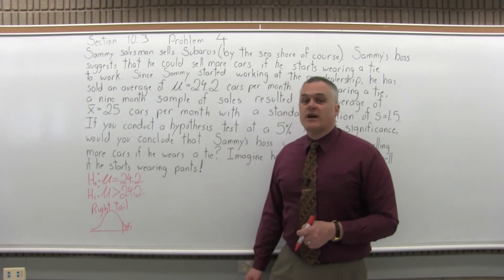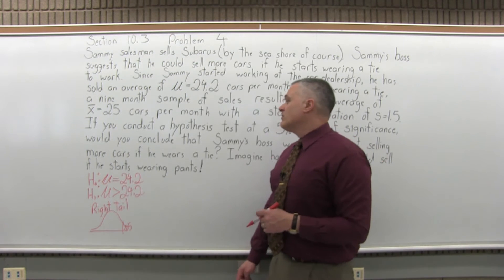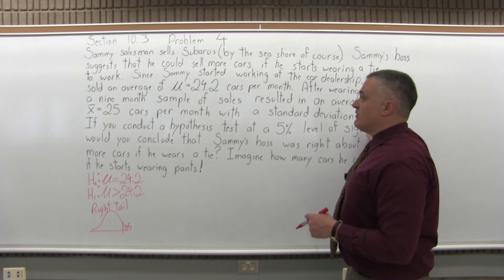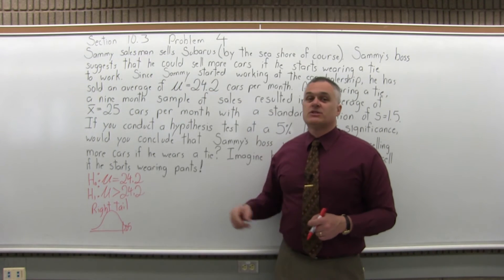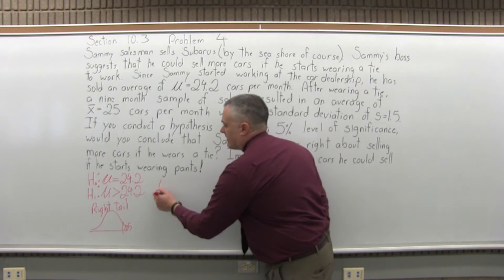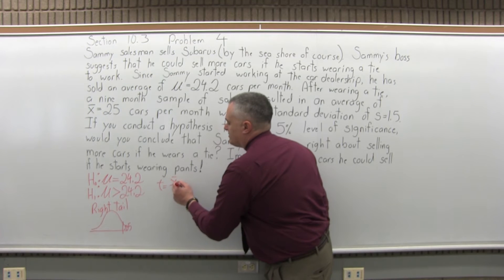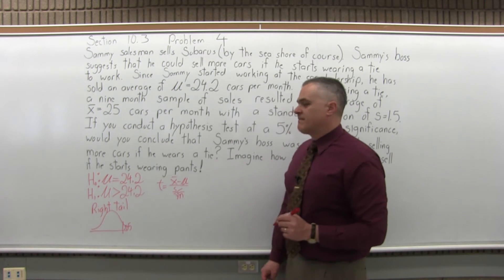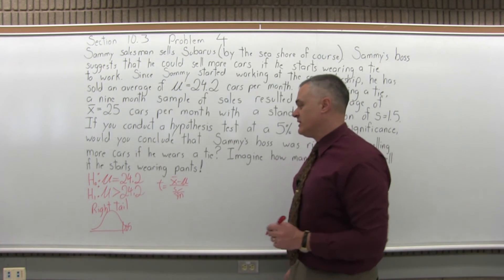Step four is compute the value for T. Now, again, we're computing T as opposed to Z because we know the standard deviation of the sample. If we knew the standard deviation of the whole population, then we would compute Z. So for T, T equals X bar minus mu divided by S over square root of N. That's the formula for T that we'll fill in.